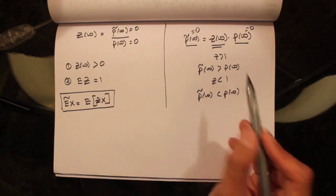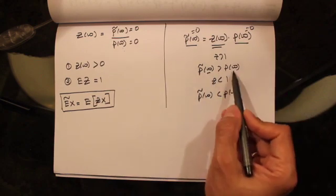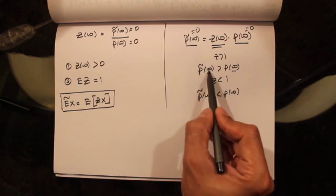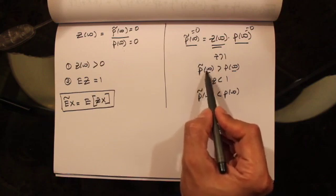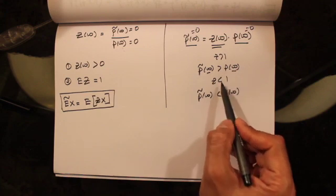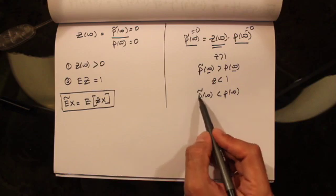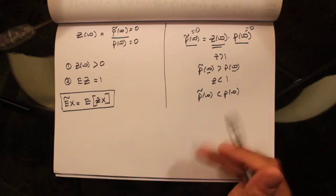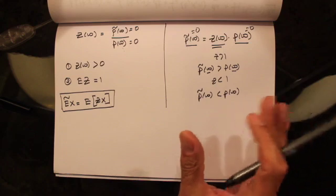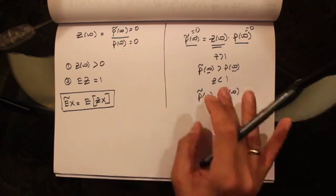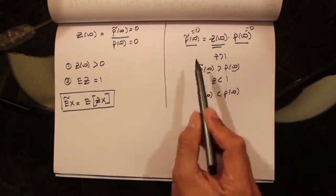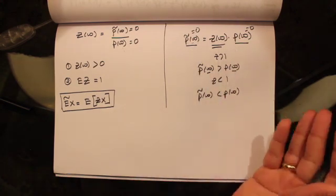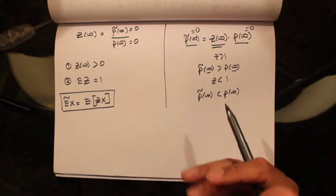What the Radon-Nikodym derivative is trying to do is redistribute probabilities across various outcomes. When Z of omega is greater than 1, the probability of that particular path under the risk-neutral measure is greater than under the actual probability measure. When Z is less than 1, the probability under the risk-neutral measure is less than under the actual probability measure. So Z is redistributing probabilities across various paths.